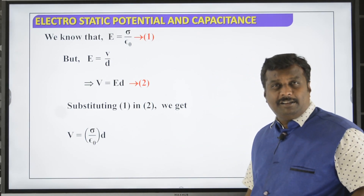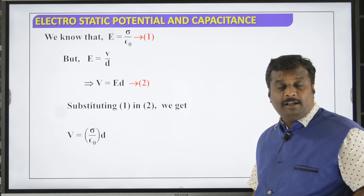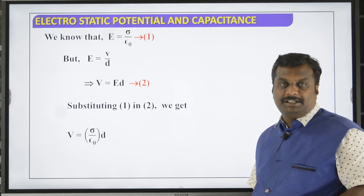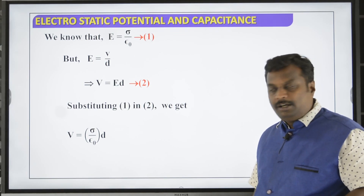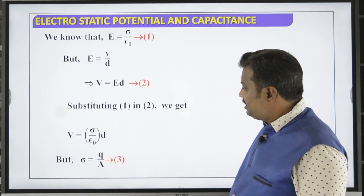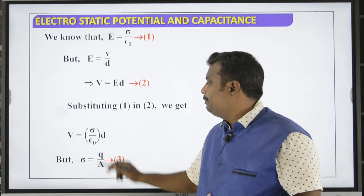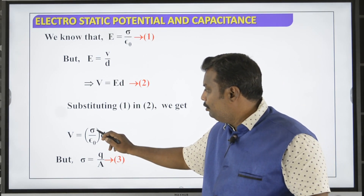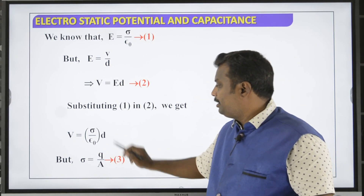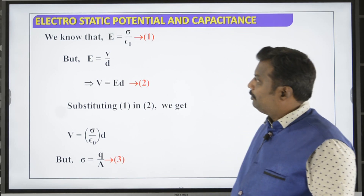Also, E equals V by d, or V equals E times d — this is equation 2. Substituting equation 1 into equation 2: V equals σ divided by ε₀ times d. Now substituting σ equals Q/A, we get V equals Q divided by A·ε₀ times d.